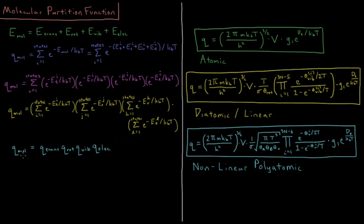Up until this point in the series, I've been saying that when we have an energy which is a sum of different contributions, we have a partition function which is a product of those different contributions. This is the math which justifies that. We can take contributions from each individual component, multiply them together, and obtain the total partition function for various kinds of atoms and molecules.